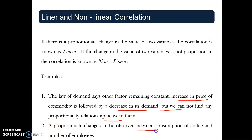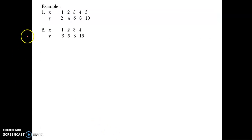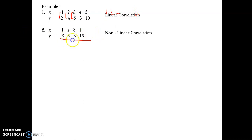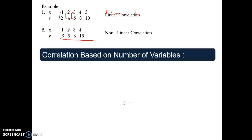For a linear correlation example: if a company has 20 employees and gives two cups of free coffee each day, the consumption is 40 cups. If employees increase by two, cups increase by four. The ratio remains the same — 20:40, then 22:44, always one is to two. This proportionate relationship makes it a linear correlation. X is impacting Y and the change is always proportionate.